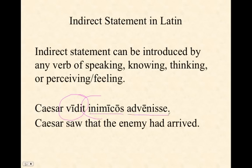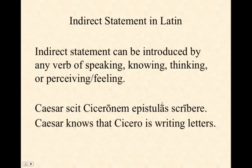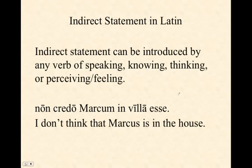In a moment we'll talk more about the perfect tense infinitive. Another example: Caesar knows that Cicero is writing letters. 'Caesar knows' introduces the indirect statement; everything after has an accusative subject, an infinitive verb, and another accusative functioning as the object of that infinitive. Also: non credo Marcum in villa esse — I don't think that Marcus is in the house. Credo, meaning to think or believe, introduces the indirect statement; Marcum is the accusative subject and esse is the infinitive of the verb to be.